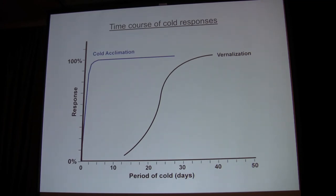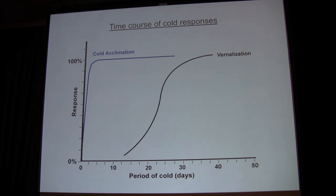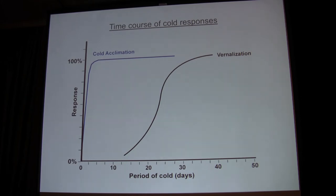Looking at this type of cold response, there are two major types of cold responses in plants. One is cold acclimation, where plants are exposed to cold and there's almost immediate gene expression and biochemical changes — literally within minutes of cold exposure there are changes in gene expression occurring. But a vernalization response — that acquisition of the ability to flower after exposure to cold — is something that takes a long exposure to cold. In the lab, with Arabidopsis, we're looking at 40 days of cold as fast as we can get a full response to occur in certain types.